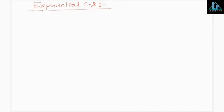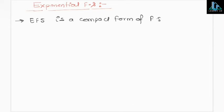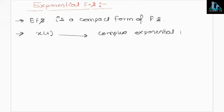Our next topic is exponential Fourier series. Exponential Fourier series is a compact form of Fourier series. Here, the function x(t) is expressed as a weighted sum of complex exponential functions, that is e^(jnω₀t).